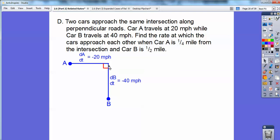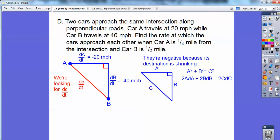So anyway, so DA that's going this way is 20 miles per hour. And DB that's going this way is 40 miles per hour. Again, they're negative because they're getting less and less. So the destinations are shrinking. There we go. There's my fraction bars.